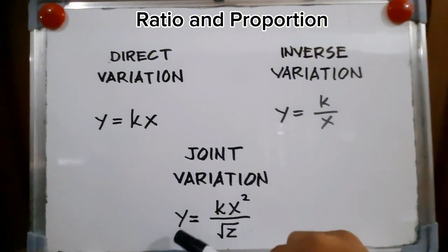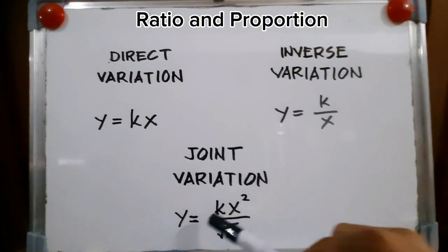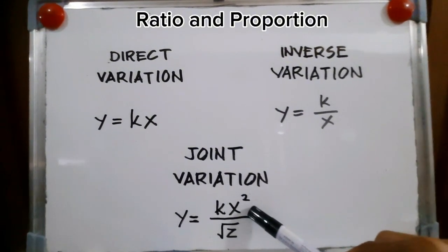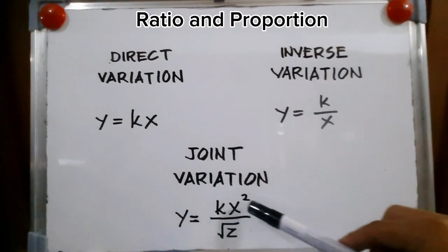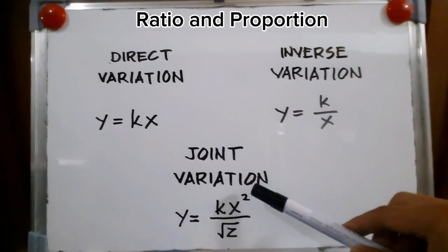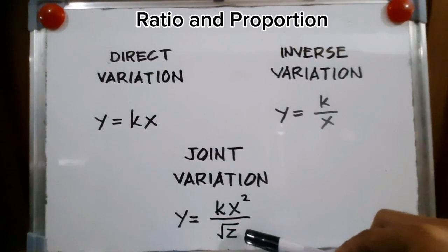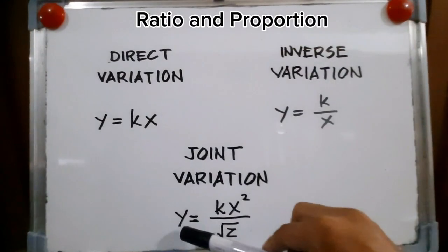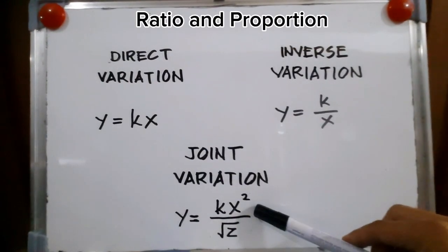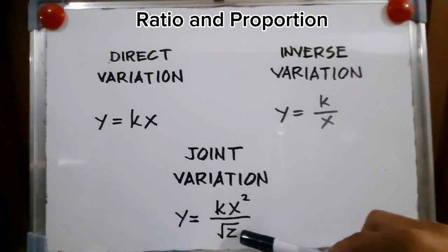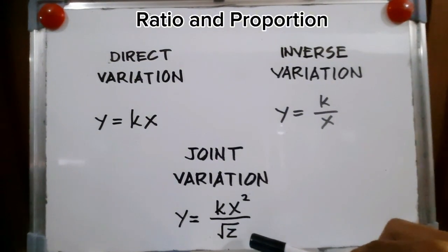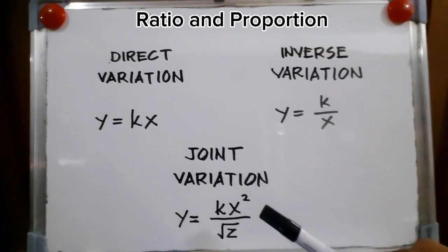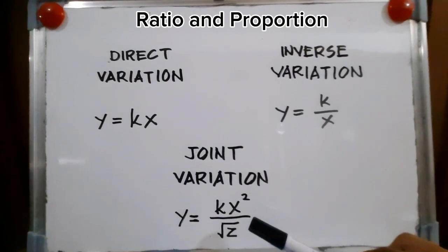In joint variation, Y is directly proportional to the square of X and inversely proportional to the square root of Z. If Y goes up, then X squared goes up while the square root of Z goes down. If Y goes down, X squared goes down and the square root of Z goes up. Those are the three variations we'll be discussing in ratio and proportion.